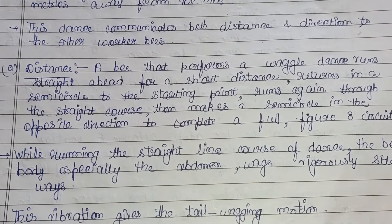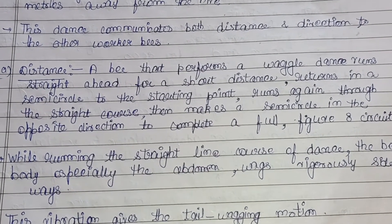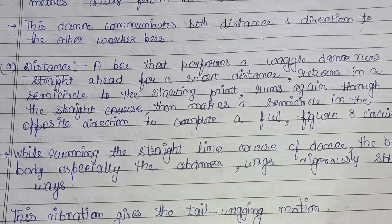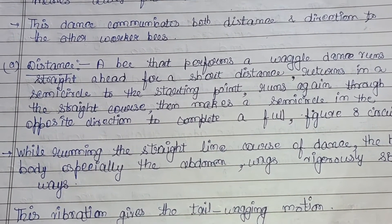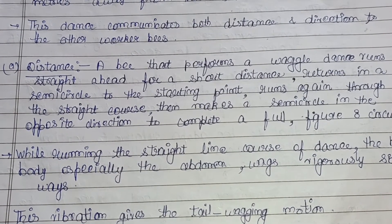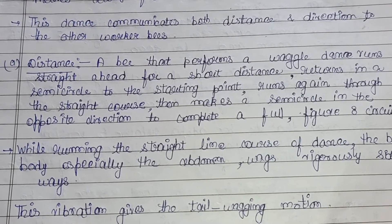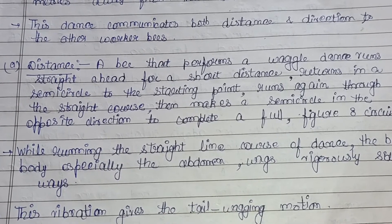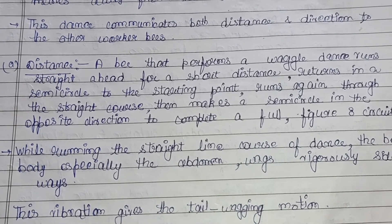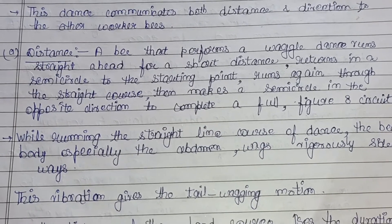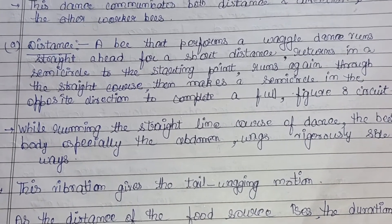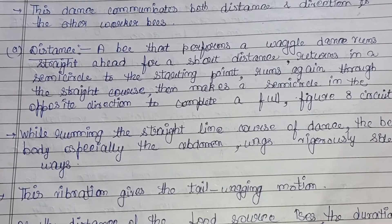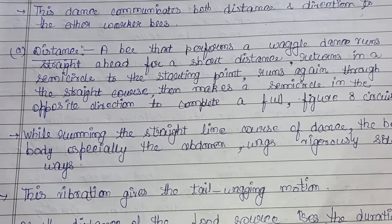For distance: a bee performing the waggle dance runs straight ahead for a short distance, then returns in a semicircle to the starting point. She then runs again through the straight course and makes a semicircle in the opposite direction, completing a full figure-eight circuit.